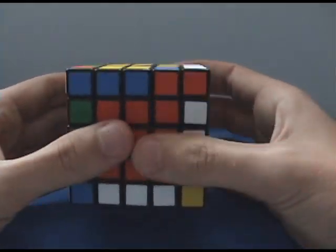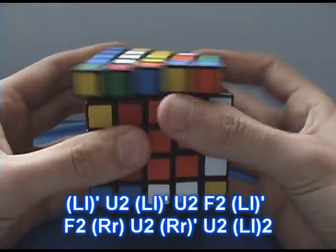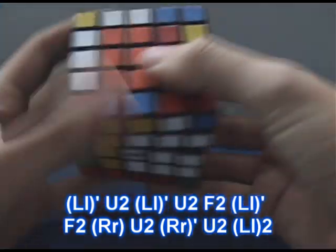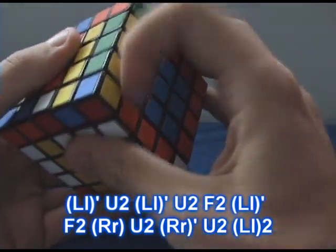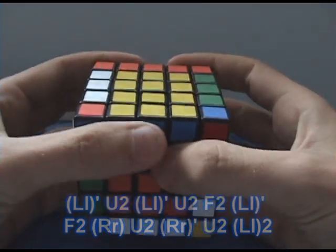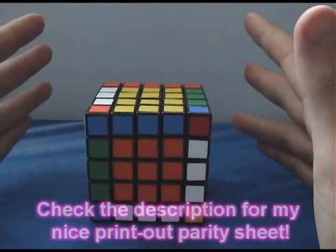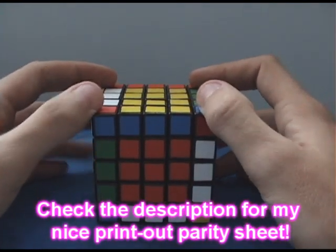And the algorithm for this is L' U2, L' U2, F2, L', F2, R, U2, R', U2, L2. Not quite as long as the other one. Now those two are actually the only parity cases on the 5x5.